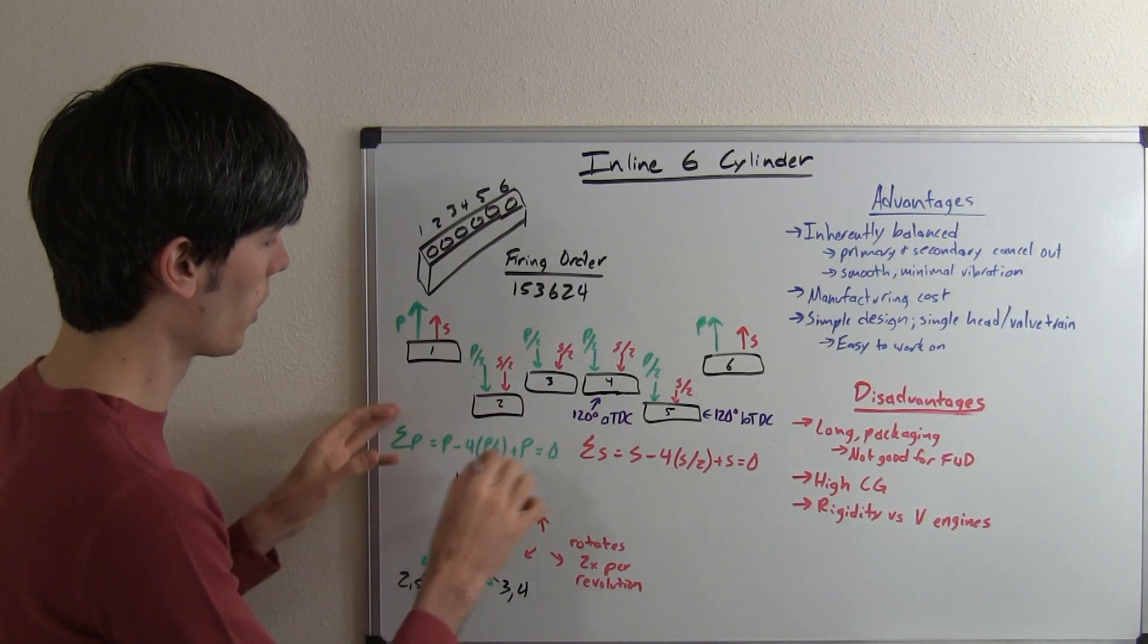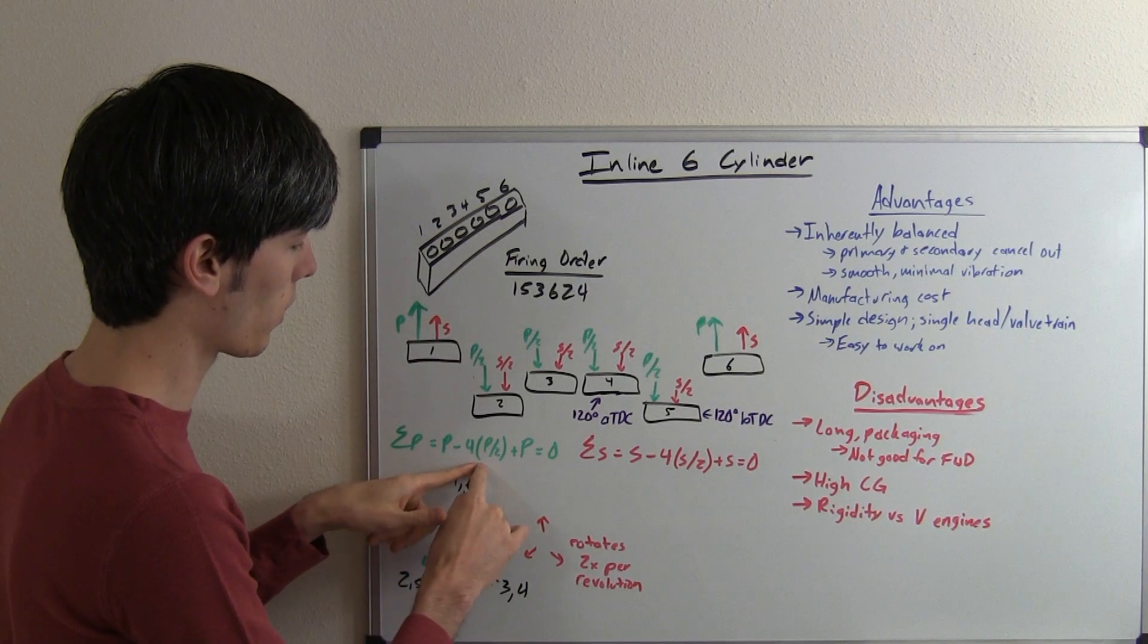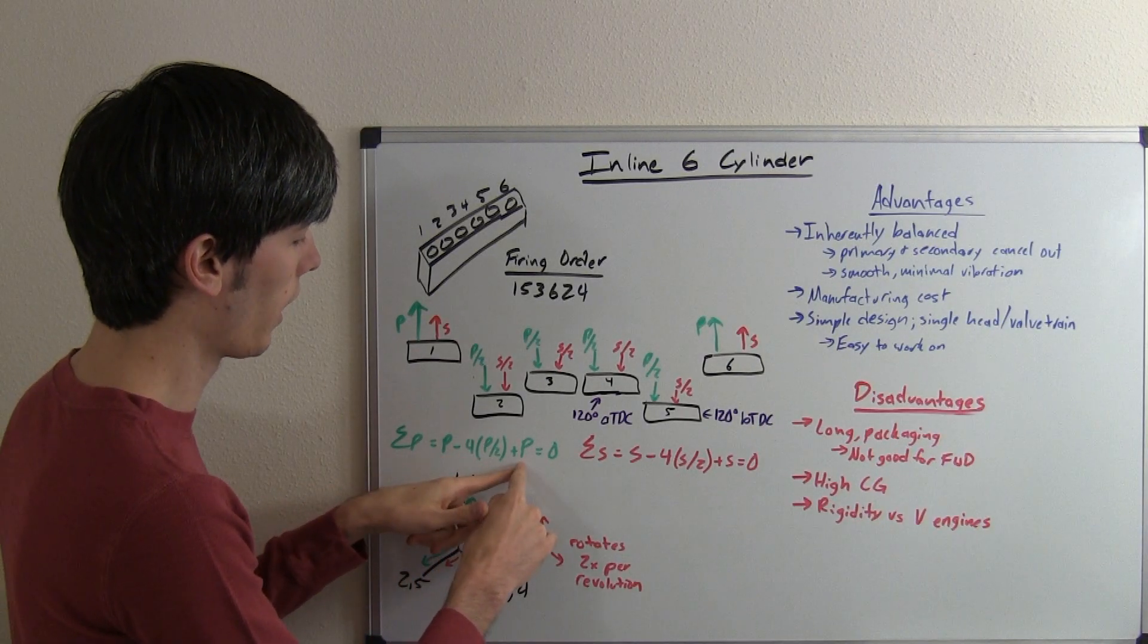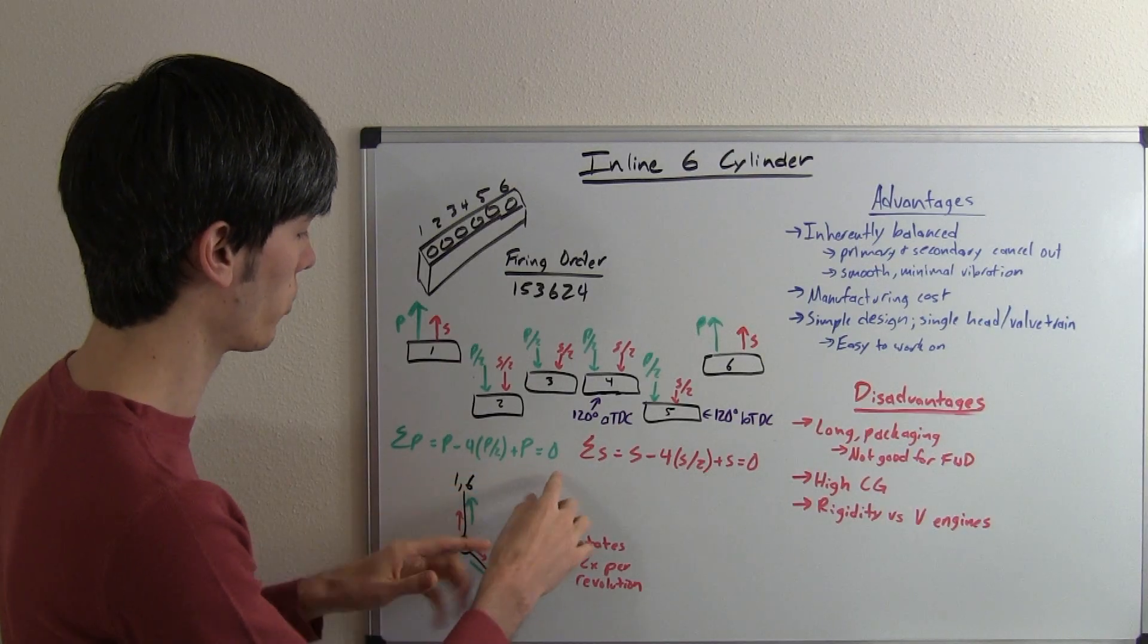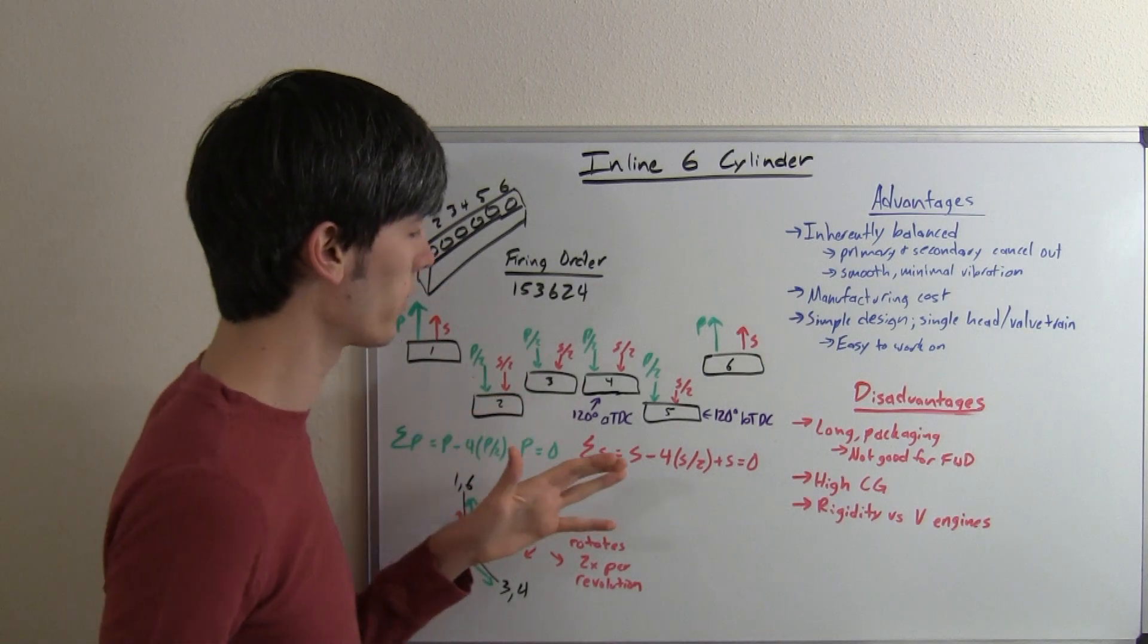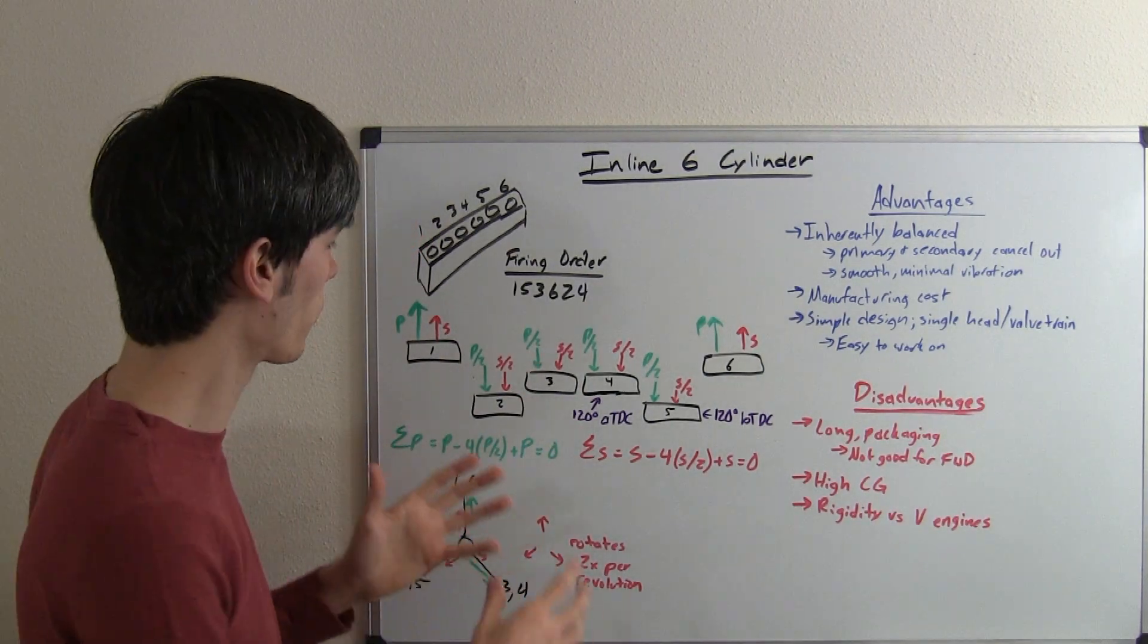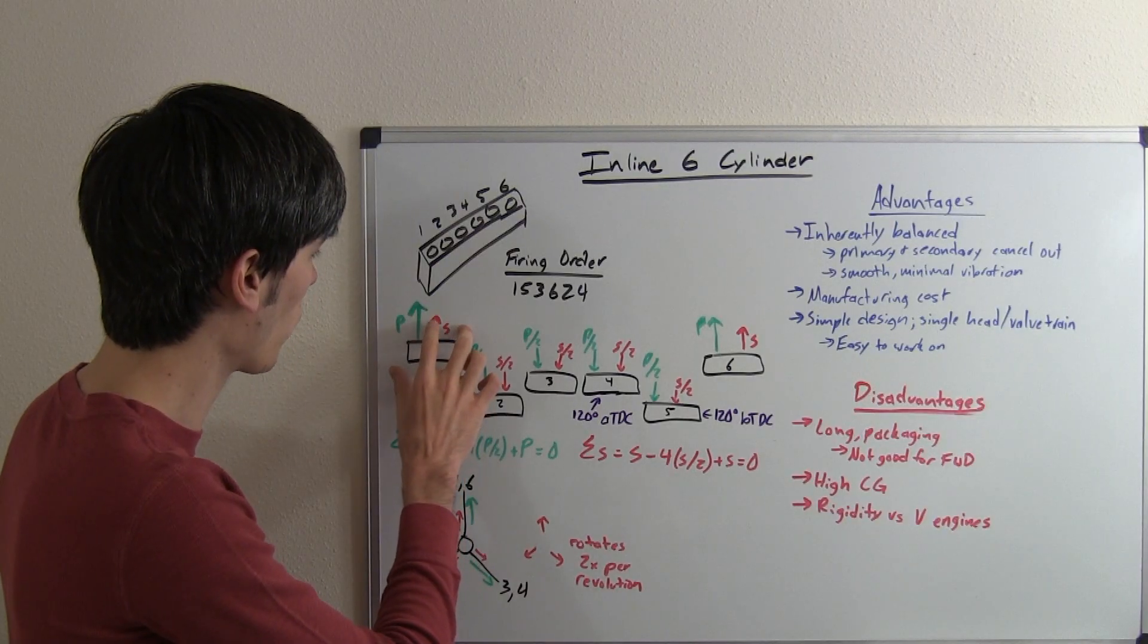So your primary forces when you sum all those up, you've got primary minus four half primaries that gives you negative one, and then plus one more so that gives you zero. So the sum of all of your forces is equal to zero, and the same thing happens with the secondary forces. And that's why these inline six cylinders are so popular and well balanced.